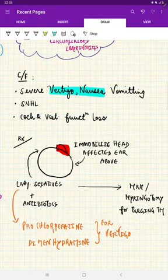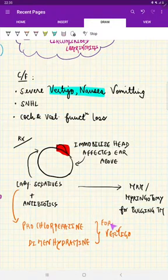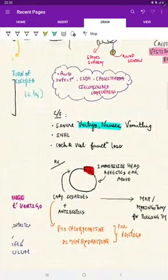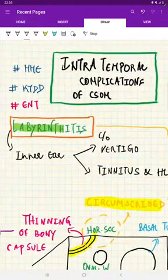Now, what are the labyrinthine sedatives? They are basically prochlorperazine or dimenhydrinate. These two products are basically given for symptomatic relief of vertigo. And this is all about labyrinthitis.